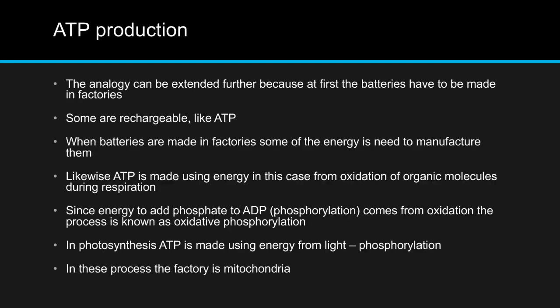The analogy can be extended further because at first the batteries need to be made in factories — some are rechargeable like ATP. When these batteries are made in factories, some energy is needed to manufacture them. Likewise, ATP is made using the energy from the oxidation of glucose during respiration. Since this energy to add phosphate comes from oxidation, this process is known as oxidative phosphorylation, which is the last step of respiration, and will be discussed in our next video.